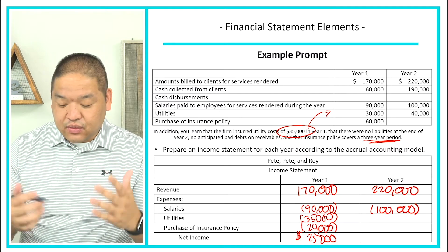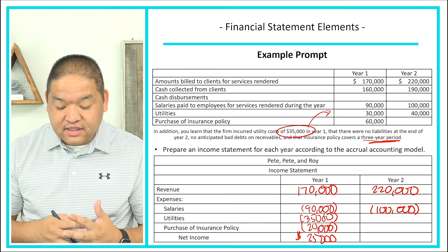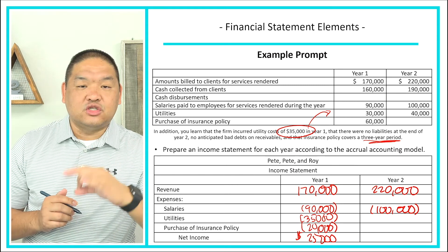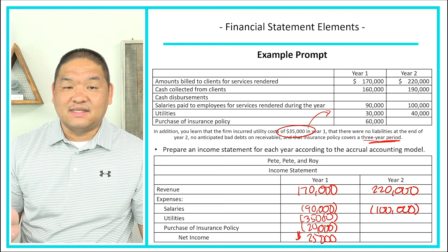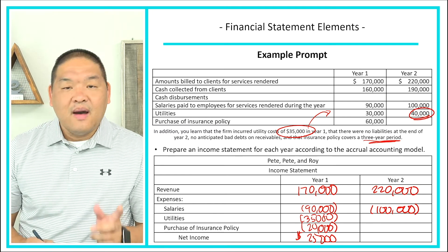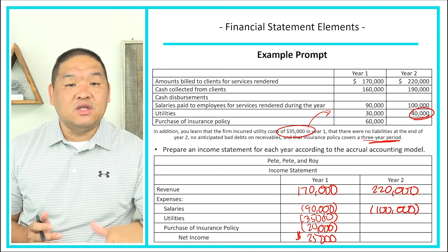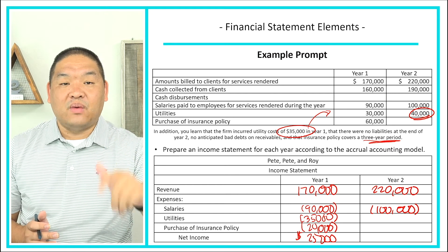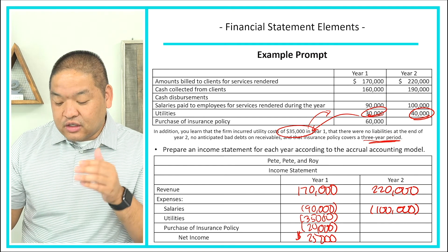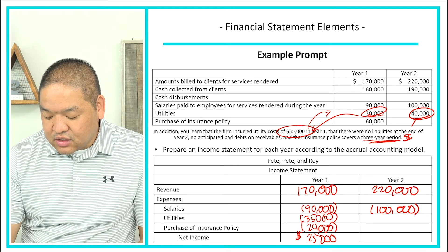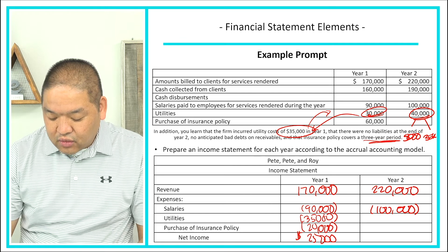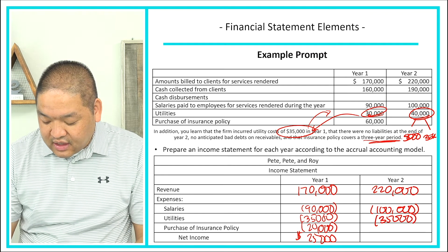Utilities in year two require careful attention. We paid $40,000 in cash, but not all of that belongs to year two. We know we incurred $35,000 in year one but only paid $30,000, leaving $5,000 unpaid. The additional info says there are no liabilities at the end of year two, meaning we paid off that $5,000 shortfall in year two. So of the $40,000 paid, $5,000 covers last year's expense, and $35,000 is this year's utility expense.